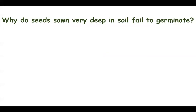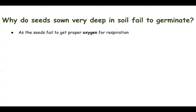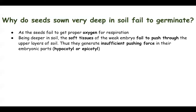Seeds sown very deep in soil fail to germinate because they do not receive adequate oxygen for respiration. Seeds on the surface are eaten by birds or animals. When buried too deep, the seeds cannot breathe, ATP production drops, and the soft tissues of the hypocotyl or epicotyl are damaged and cannot push through the layers of soil, so the seedling cannot form.